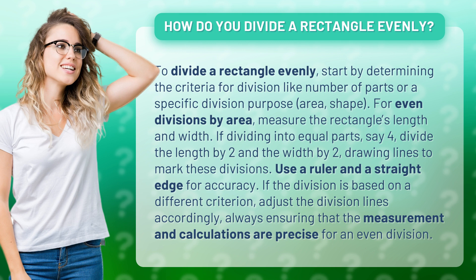For even divisions by area, measure the rectangle's length and width. If dividing into equal parts, say 4, divide the length by 2 and the width by 2, drawing lines to mark these divisions.